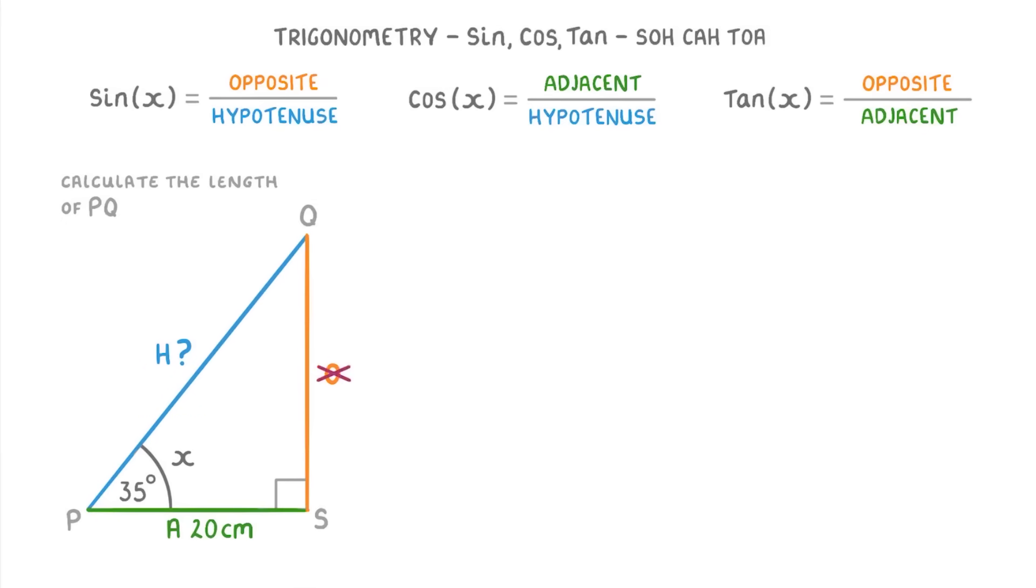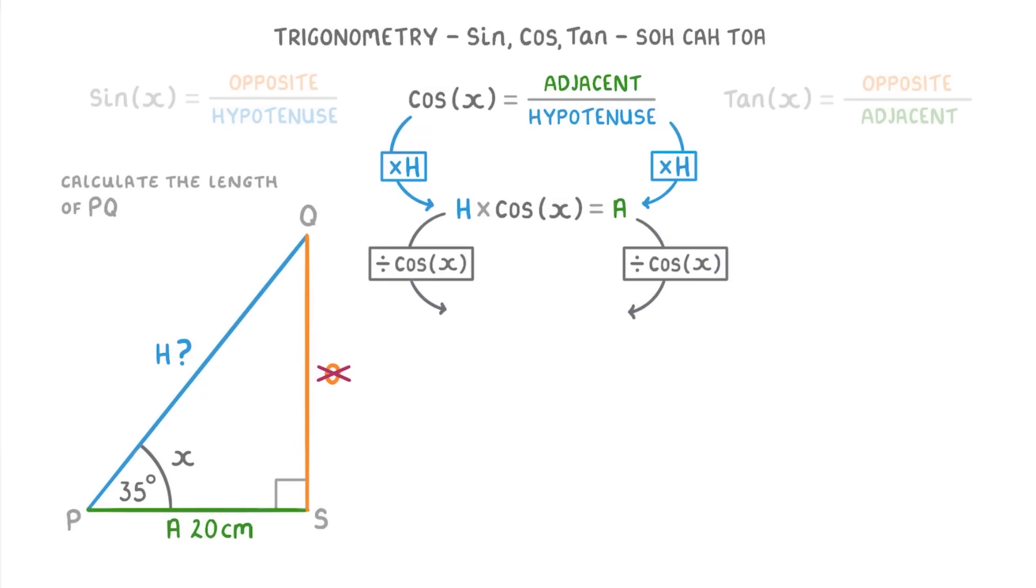This time it's the opposite that we don't really care about because we haven't been given its value and we're not trying to find it. So we need to find the equation that has the adjacent and the hypotenuse in it, which will be cos X equals adjacent over hypotenuse. Because we're looking for the hypotenuse though, we're going to have to rearrange the equation to get the hypotenuse by itself, which we can do by multiplying both sides by the hypotenuse and then dividing both sides by cos X to get hypotenuse equals adjacent over cos X.